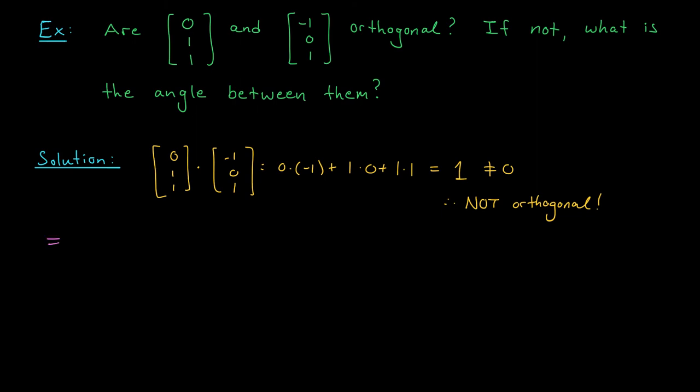In this case, we know that the dot product is 1. So 1 is equal to the norm of 0, 1, 1 times the norm of minus 1, 0, 1 times cos theta.